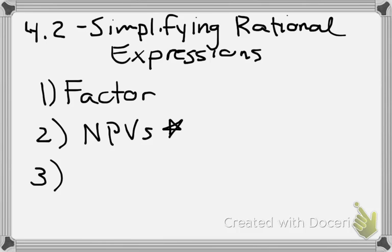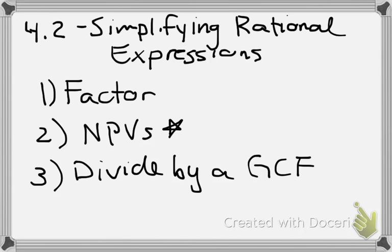Our third step is the actual simplification and that's where we divide by a GCF. So that's where we're actually going to start crossing things out and simplifying.